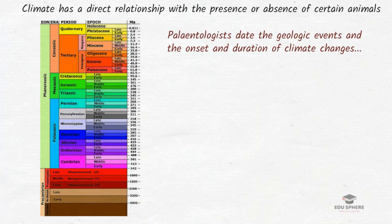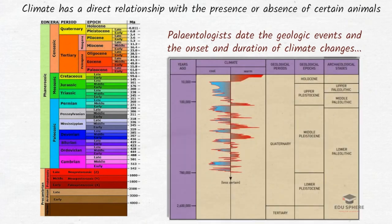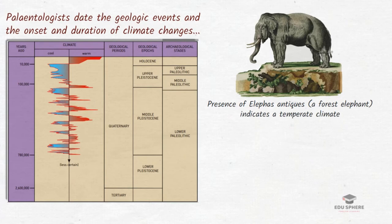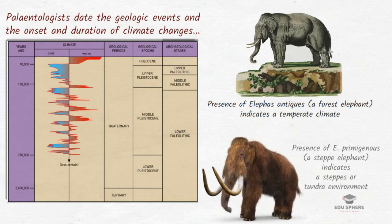Scientists superimpose climate change studies on this geologic data, as shown in a second picture summarizing the major climatic changes the earth has experienced in geological periods. You can pause this video to observe the temperature variation graph shown in the table. Based on the type of fossil discovered, we can assume the type of climate in that region — for example, if evidence for Elephas antiquus is found, one can assume a temperate climate.